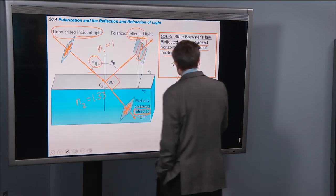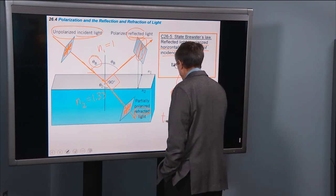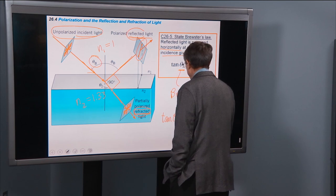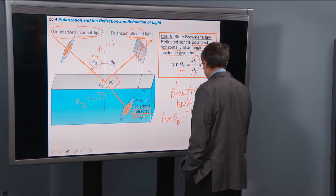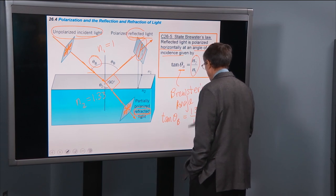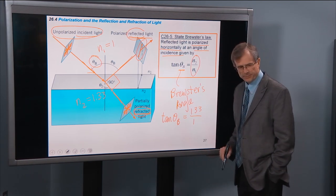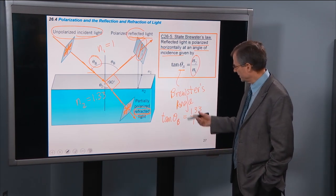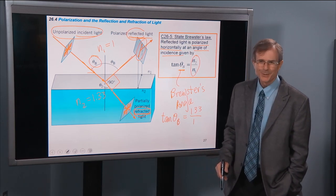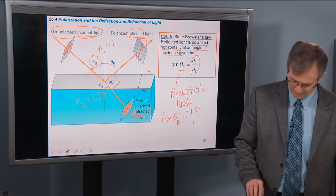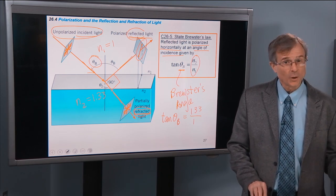Then we're going to plug those numbers in, and tangent of θB is 1.33 over 1. And then we can find that angle by taking the inverse tangent. Whatever that angle turns out to be would be Brewster's Angle, and you get totally polarized light.